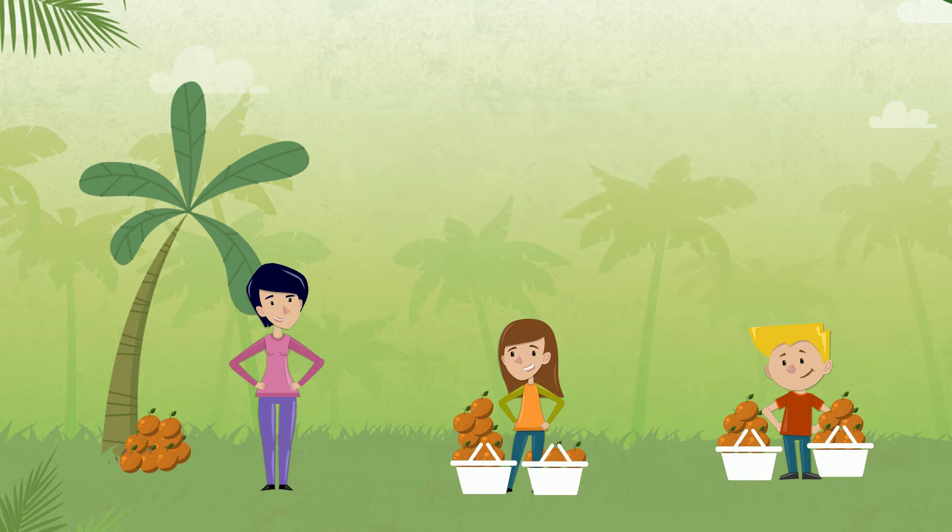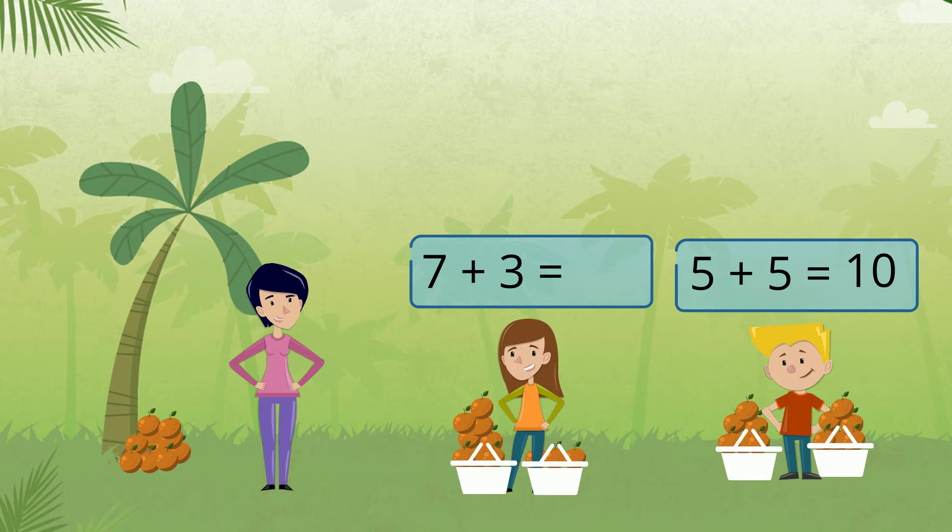Jack started thinking, five plus five, I have ten. Jill was adding hers, seven plus three, that's ten as well.